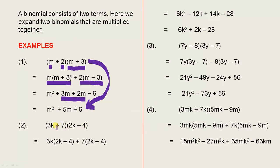Number 2: 3k plus 7 multiplied by 2k minus 4. So we have 3k multiplied by 2k minus 4, which is here. We have plus 7 multiplied by 2k minus 4, which is here. Now if we expand that, if we multiply the 3k by those two terms and the 7 by those two terms, we get 6k squared minus 12k plus 14k minus 28.